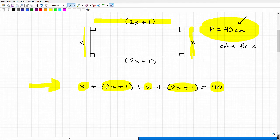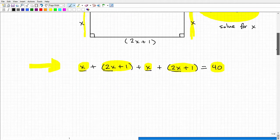We have a bunch of x's and 2x's and 1s. We need to add like terms. We have an x, a 2x, an x, and another 2x. 2x and 2x gives me 4x, and then another x and x. In total, I have 6x. Then we have numbers, which are like terms. We have 1 and 1, so that's 2, and that equals 40.